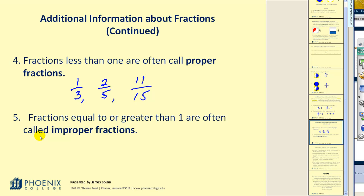Number five, fractions equal to or greater than one are often called improper fractions. So, if my denominator is five, and I have a numerator of, let's say, seven, that would be considered an improper fraction, which would be greater than one. We should also note that if the numerator and denominator are equal, if I have eight-eighths, that is also considered an improper fraction.